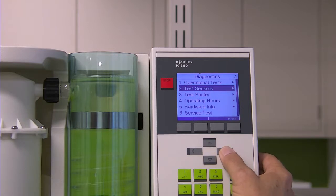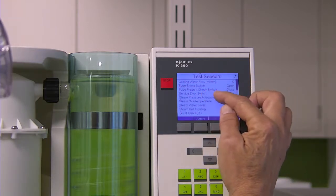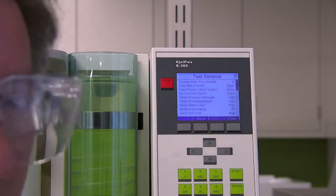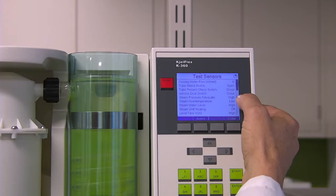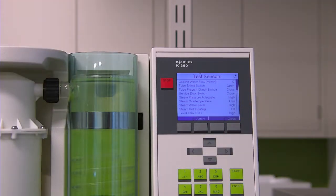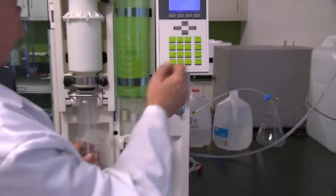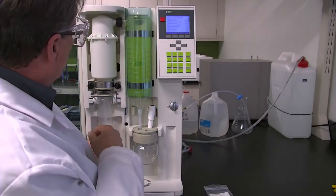From test sensors, the third one down is tube present check switch. Currently, because this instrument is working perfectly fine, it shows closed. The problem occurs when you put a sample tube on and close the system, but this still shows open. That's the problem we're going to fix.